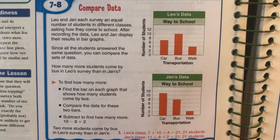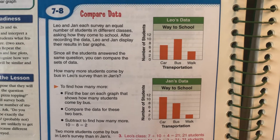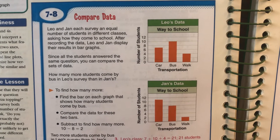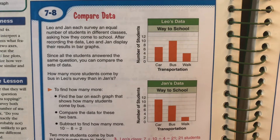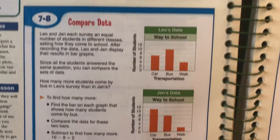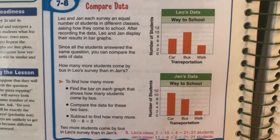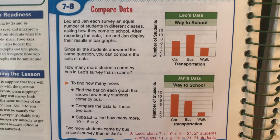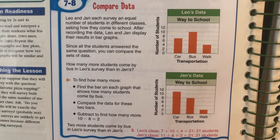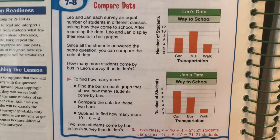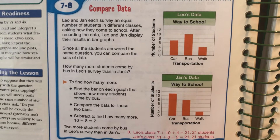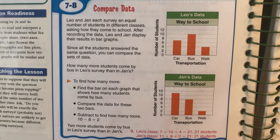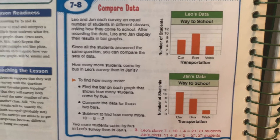Let's look at this first set of graphs on page 240. It says Leo and Jan each survey an equal number of students in different classes. It would be as if one student went to my fourth grade class and surveyed people, and another went to the fifth grade class. Because the fifth grade only has 13 kids, you only surveyed 13 in the fourth grade as well, so you both surveyed 13 kids.